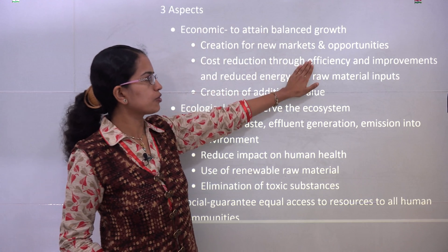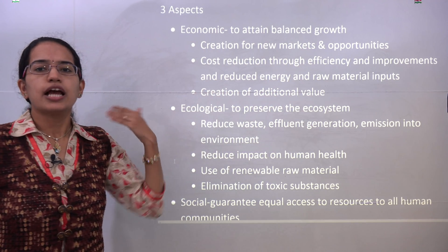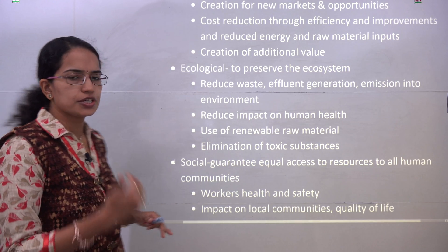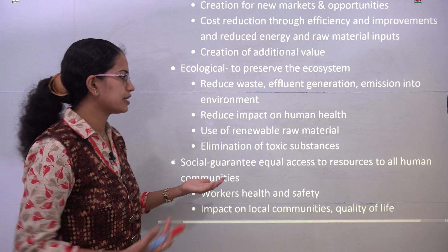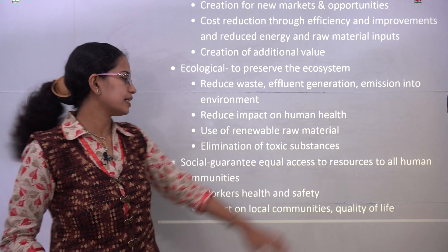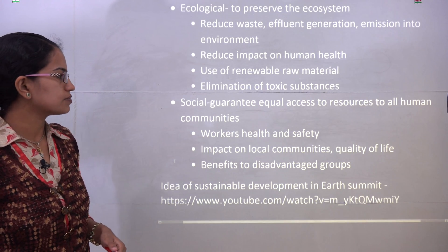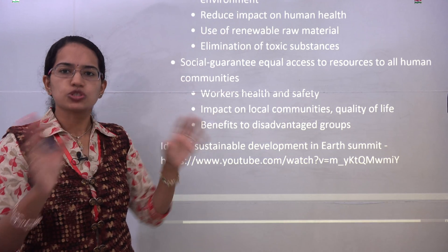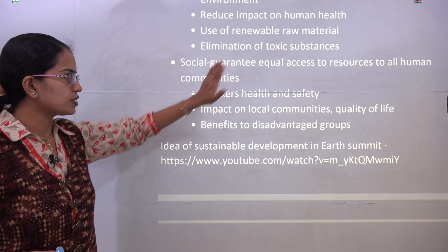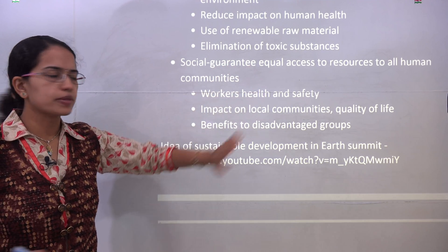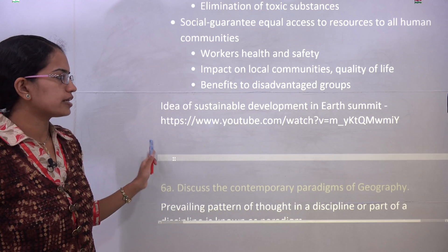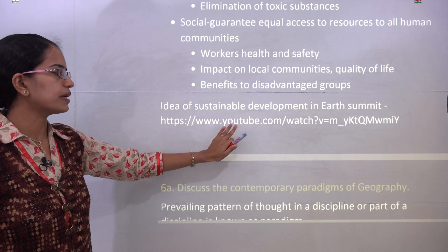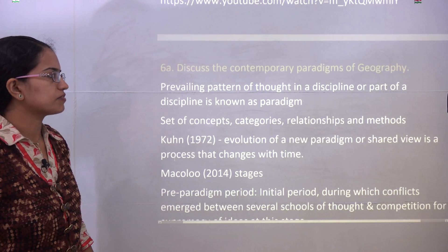Under the economic aspect, we talk about new markets, new opportunities, efficiency in production, and value addition. Under the ecological approach, we talk about reducing waste, human impact, renewable raw materials, and eliminating toxic substances. Under social, we talk about guarantees for each individual — resource allocation, safety, working conditions, good community life, and benefits. We have talked about sustainable development under the Earth Summit in the following lecture, so you can refer to that.